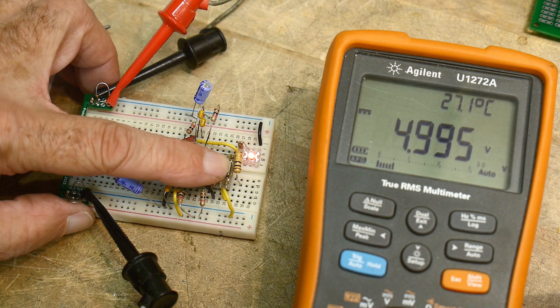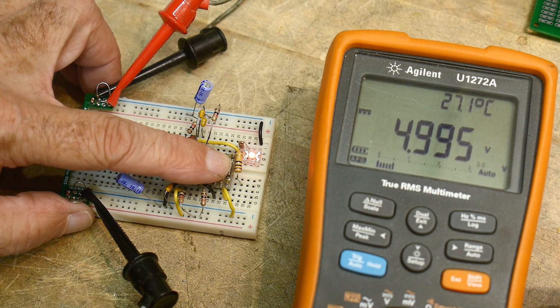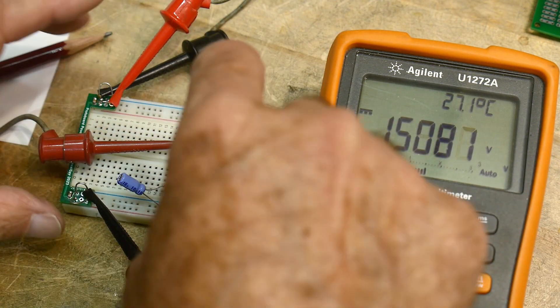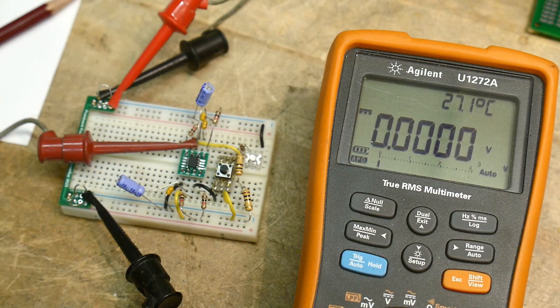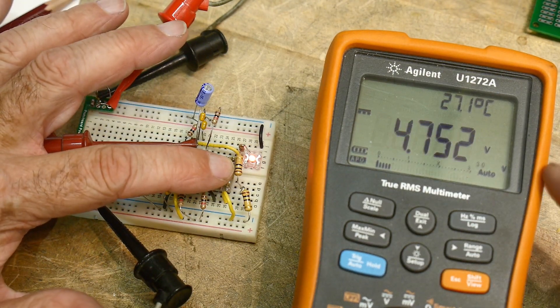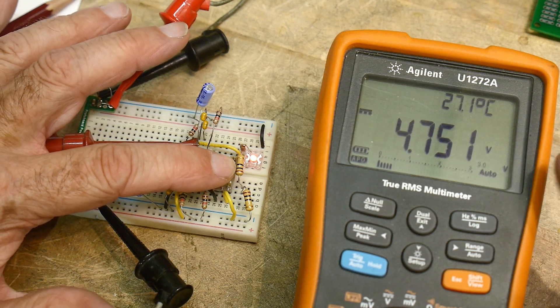So at some current it's just fine, but at 250 milliamps, it's dropping a whole bunch of voltage. Okay. And so let's go ahead and measure the drop voltage.